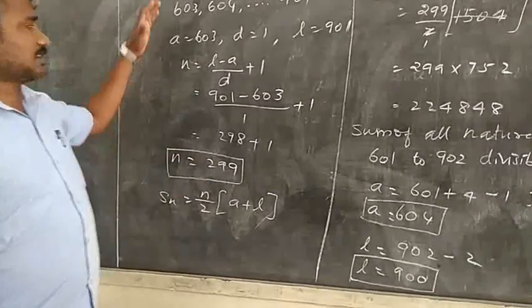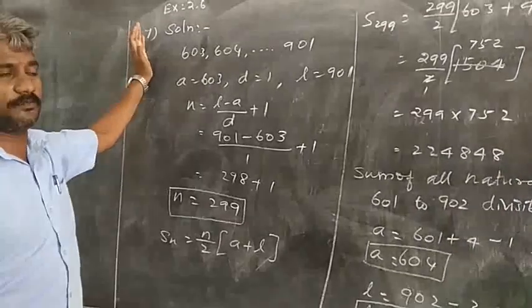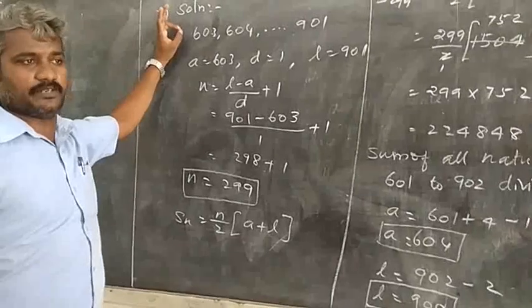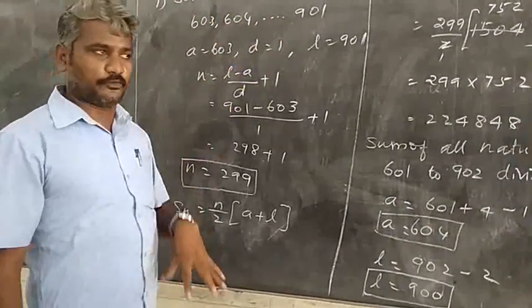Hi students, last class exercise 2.6, 6th problem finished. Now 7th problem: find the sum of all natural numbers between 602 and 902 not divisible by 4.